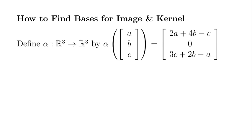Let's look at an example of finding bases for the image and kernel of a linear transformation. Let's say you have a linear transformation from R3 to R3 defined by this definition right here.